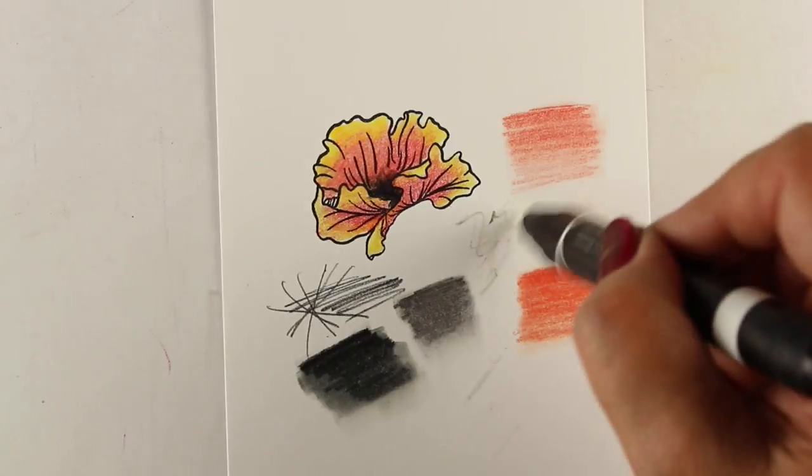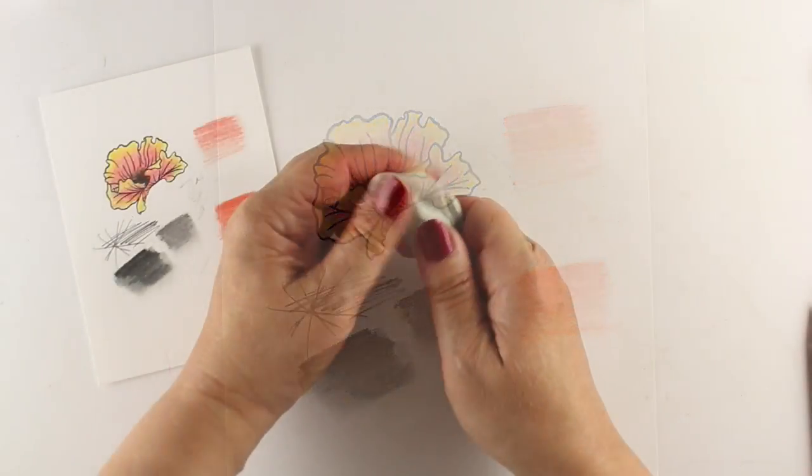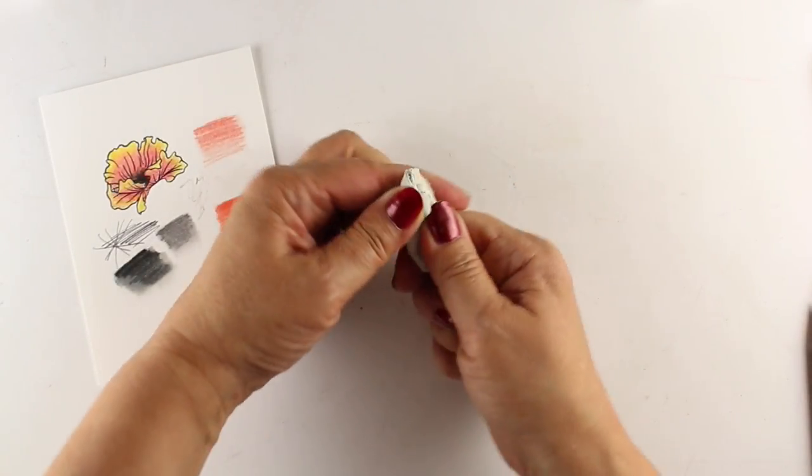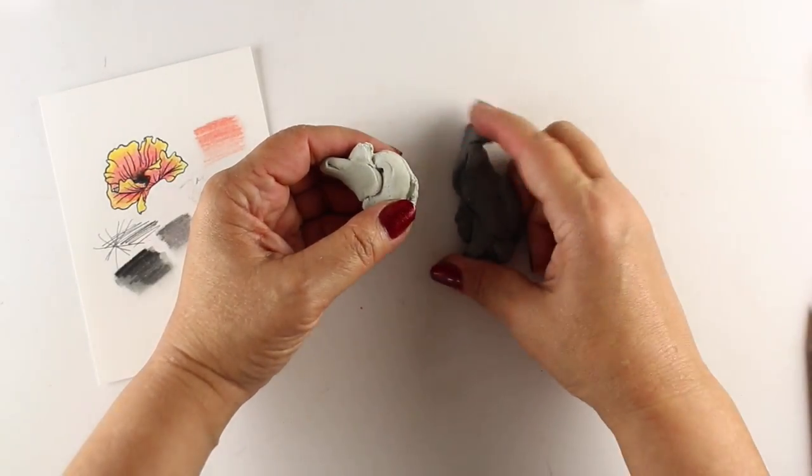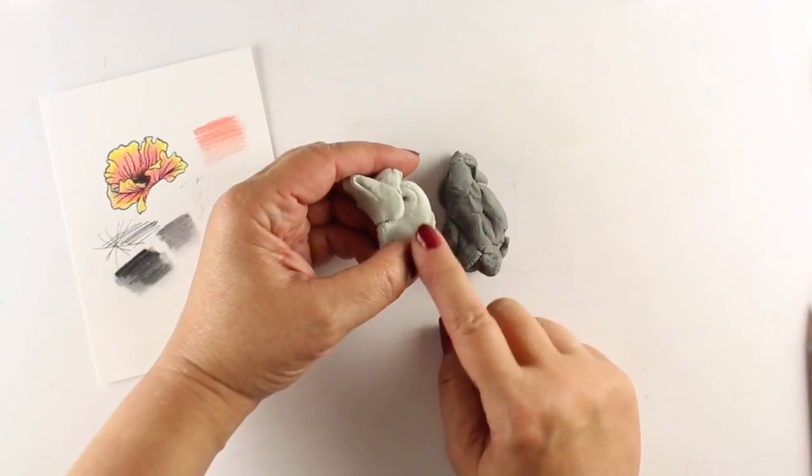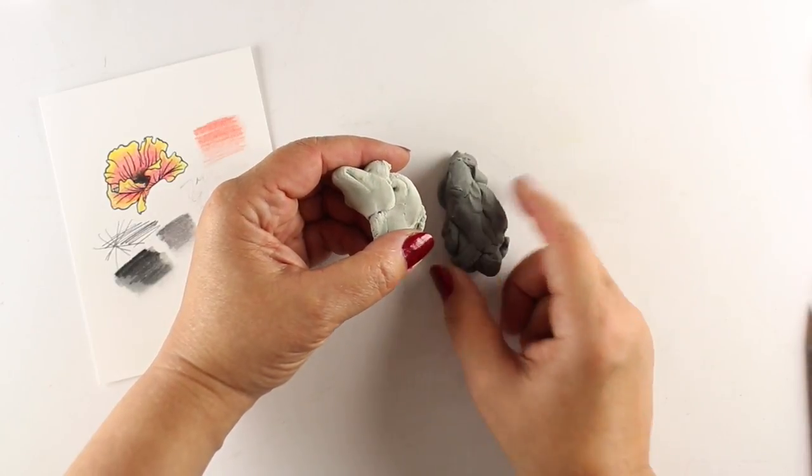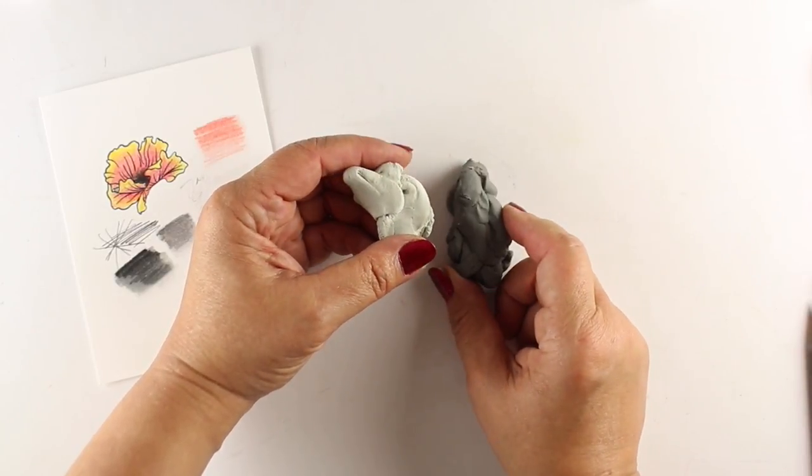The other things that's in there is two erasers. This one is a brand new—oh my gosh it feels so nice—brand new kneaded eraser. This is my old one from college, actually probably a couple of them from college mushed together.